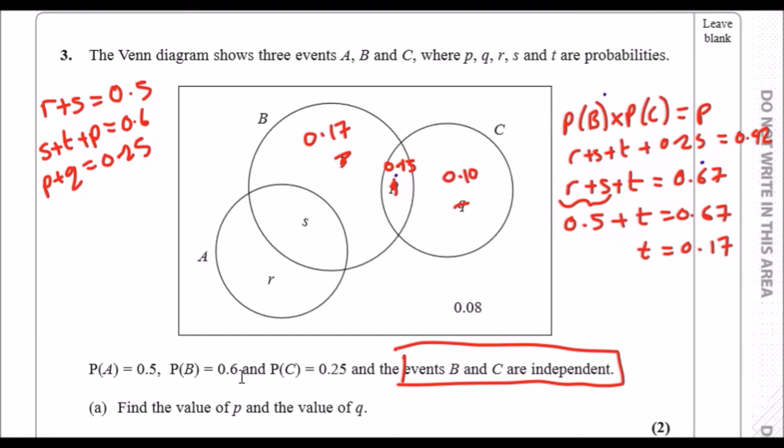And again, the whole of B we know equals 0.6. So sum these up and subtract it from 0.6. So you got 17 plus 15, the answer will give us 28, so s is 0.28. And of course r is the same thing: the whole of A equals 0.5, take away 28 will give us 22, so 0.22.